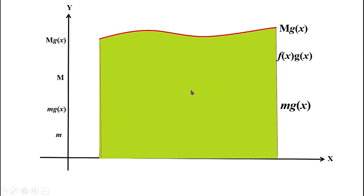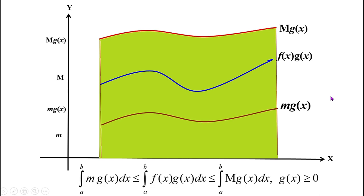We have three areas: the area under m·g(x), the area under f(x)·g(x), and the area under M·g(x). Comparing all three, we can write: the integral from a to b of m·g(x) dx ≤ the integral from a to b of f(x)g(x) dx ≤ the integral from a to b of M·g(x) dx, where g(x) ≥ 0.